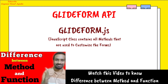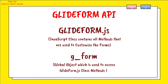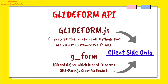There are methods present in the class — how can we access those methods? There is a global object called g_form. With the help of g_form we can access the methods present in the glide form.js class. One important thing is that GlideForm methods are only used on the client side, so when scripting in ServiceNow on the client side, we use the g_form global object to access the methods of the GlideForm class.